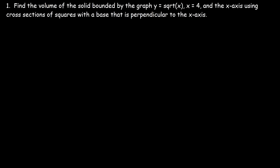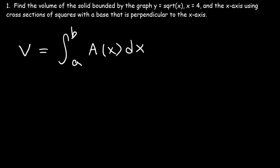In this video we are going to review how to find the volume of a solid using cross sections. There are two formulas you need to be aware of. The volume can be found by integrating from a to b of the area function, and if it's in terms of x, then the cross sections have to be perpendicular to the x-axis.